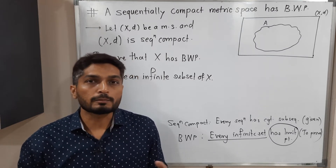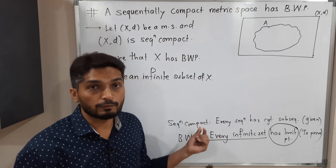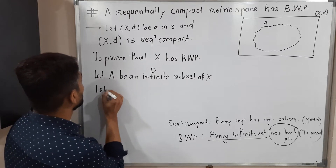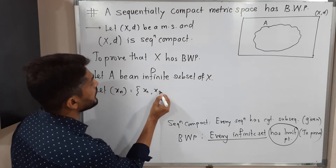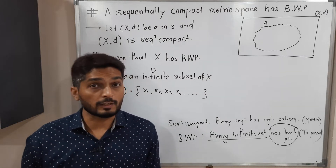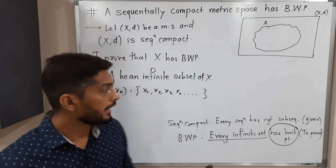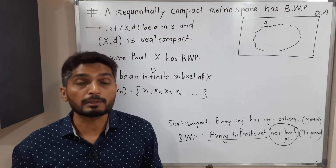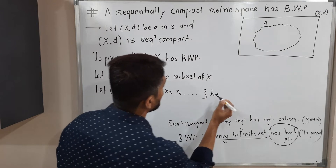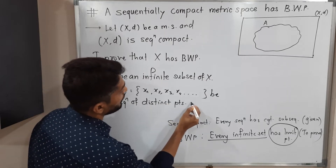This proof is constructive. Since we want to use the given information that X is sequentially compact, we need a sequence. So let xn be a sequence of distinct points of A — that is, x1, x2, x3, x4, and so on, with no point repeated. Since A is infinite it has infinitely many points, so we can form such a sequence of distinct points.